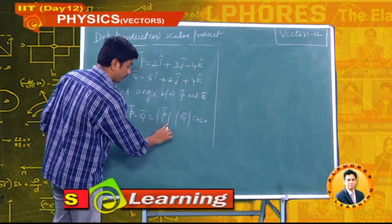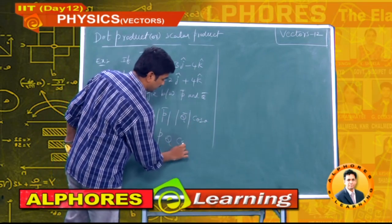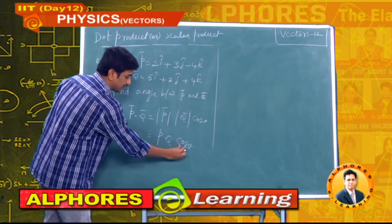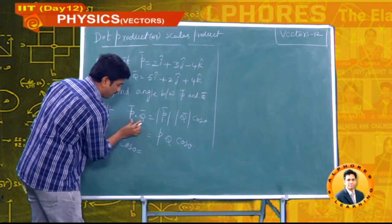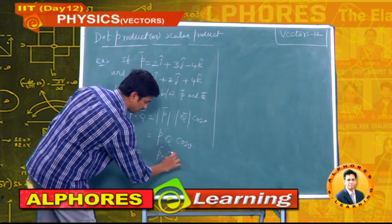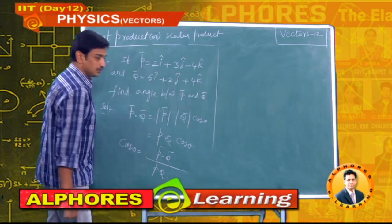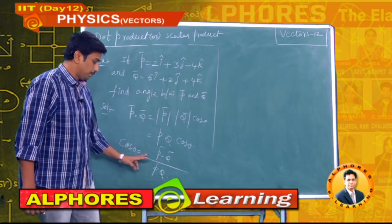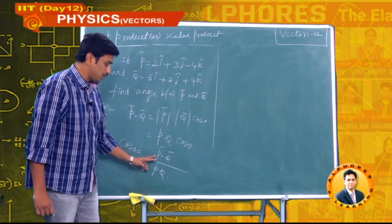We need to find θ. Rearranging, cosθ = (p̄ · q̄) / (pq). To calculate p̄ · q̄, we use: i-cap coefficient product plus j-cap coefficient product plus k-cap coefficient product.